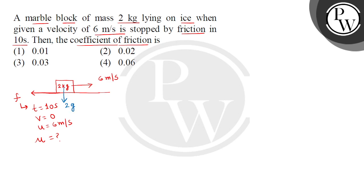So the frictional force is directly proportional to the normal reaction. Frictional force equals mu times N. And if N is equal to 2g, then the answer will be 2 mu g.